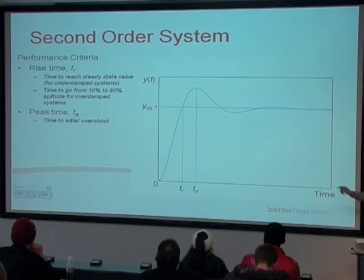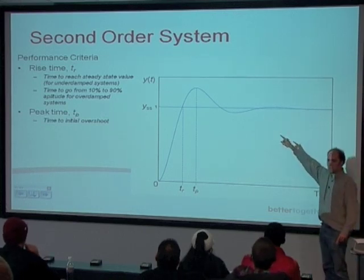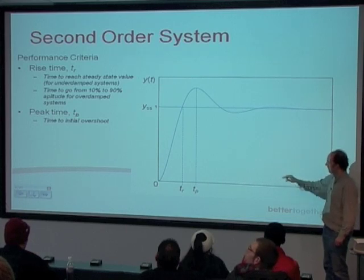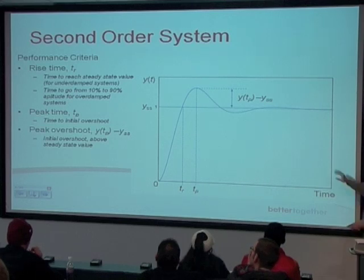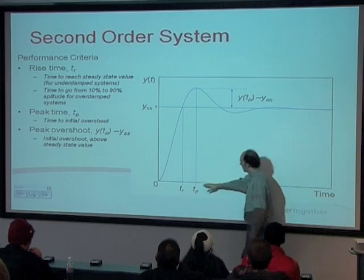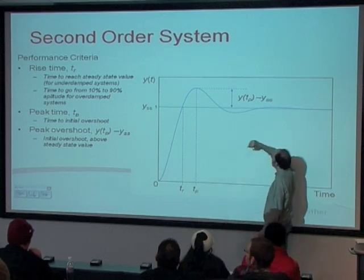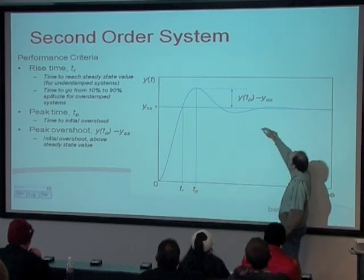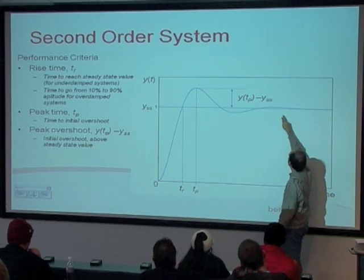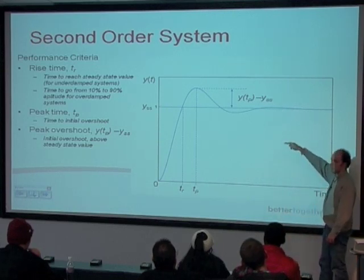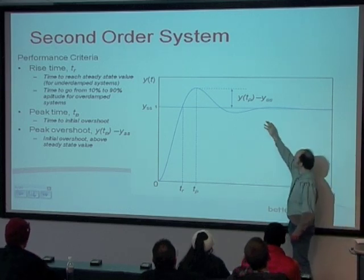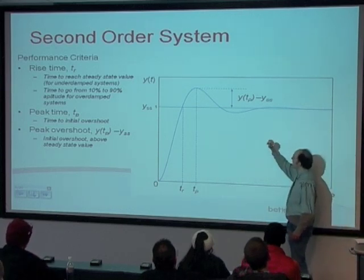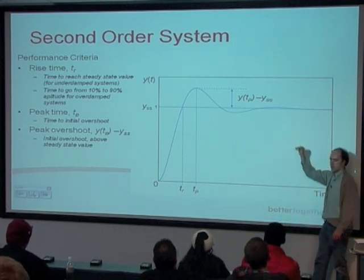Peak time T_P is the time it takes to reach the maximum amplitude of overshoot. Peak overshoot is the amplitude above the steady state value that the overshoot reaches — so Y(T_P) gives the peak value. The percentage maximum peak overshoot is calculated by taking the peak value, subtracting the steady state value, dividing by the steady state value, and multiplying by 100. For example, 16% or 18% overshoot. This can also be written as Y(T_P) over Y_SS minus one — which is the same thing.